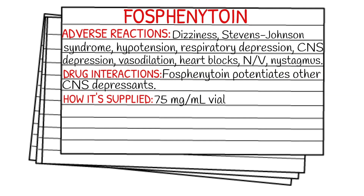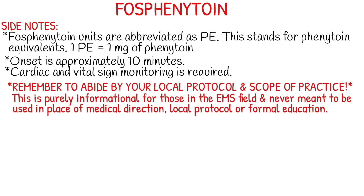How it's supplied: it could be supplied in a 75 milligram per one milliliter vial. A few side notes — the units are abbreviated as PE, which stands for phenytoin equivalents, and 1 PE equals 1 milligram of phenytoin. If you'd like to see the video I did on phenytoin, I'll link it in the upper right-hand corner.